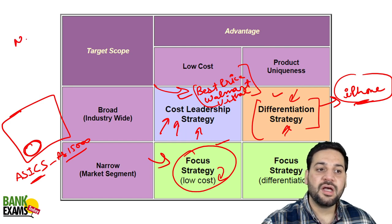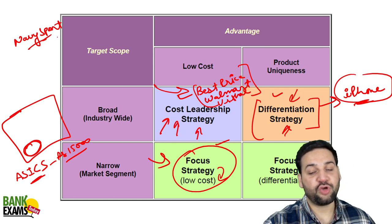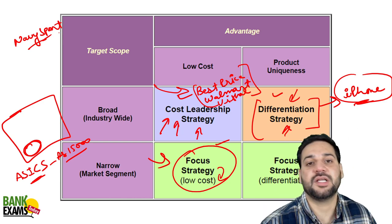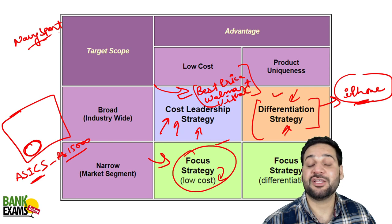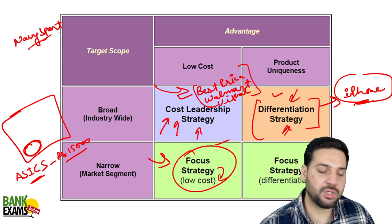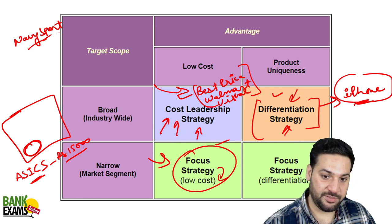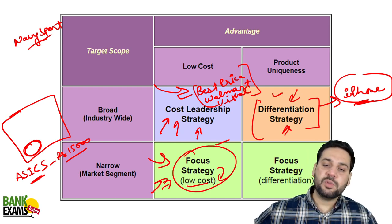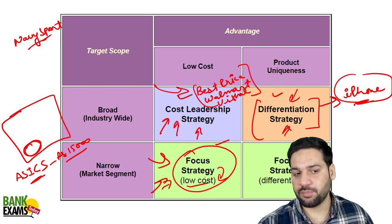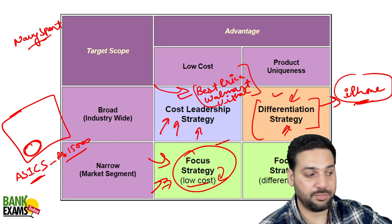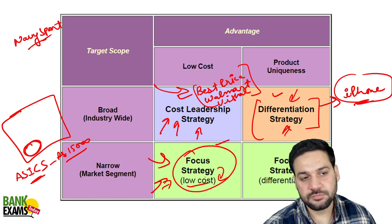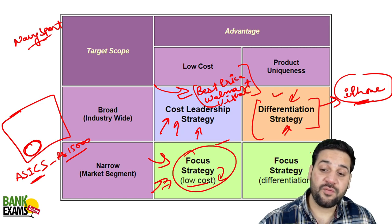Another focus strategy example: Navy Spot — a brand producing sports socks. The quality is really amazing and it's available at a cheaper price than Nike or Adidas, with comparable quality. They are focusing on a small market and the product is available at a low cost. Many other brands produce similar products, but Navy Spot's quality is the same while prices are lower.